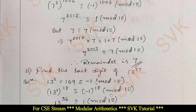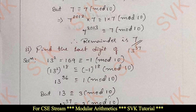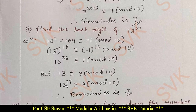The second problem: find the last digit of 13^37. Starting with 13² = 169 ≡ −1 (mod 10). Raising both sides to the power 18: 13^36 ≡ (−1)^18 ≡ 1 (mod 10). Since 10 divides 13 − 3, we have 13 ≡ 3 (mod 10). Multiplying the left-hand side by 13 and the right-hand side by 3, we get 13^37 ≡ 3 (mod 10). Therefore the remainder is 3.